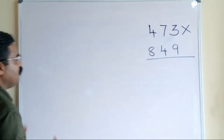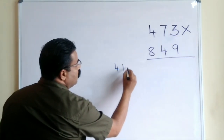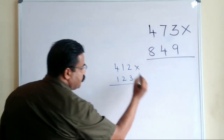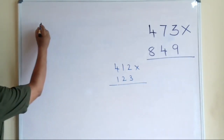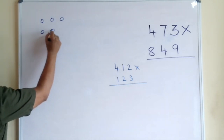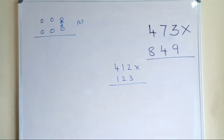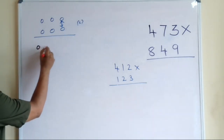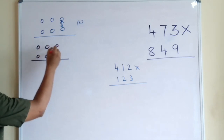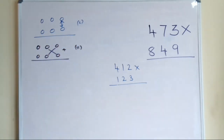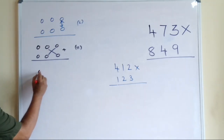For explanation I am taking the example 412 multiplied by 123. Here you have a three-digit number multiplied by another three-digit number. We have to remember five steps. The first step is to multiply the rightmost digits of both numbers. The second step is cross multiplication: you multiply crosswise and then add. So step one — multiply these two end digits; step two — multiply crosswise and add.